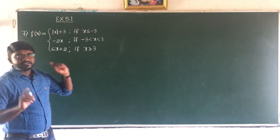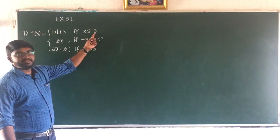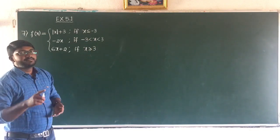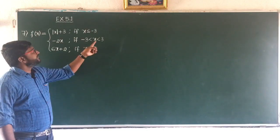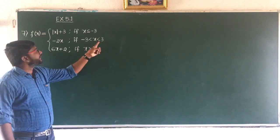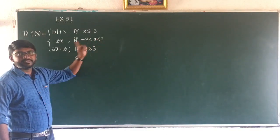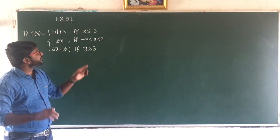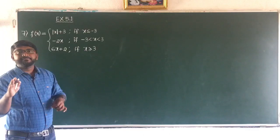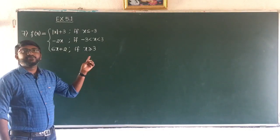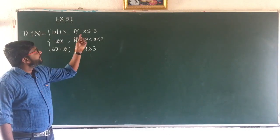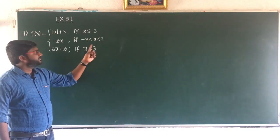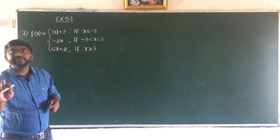The first case is c less than minus 3, the second case is c equal to minus 3, the third case is c lies between minus 3 and plus 3, the fourth case is c greater than 3, and the fifth case is c equal to 3. For c less than minus 3, c between minus 3 and plus 3, and c greater than 3, the function will be continuous.